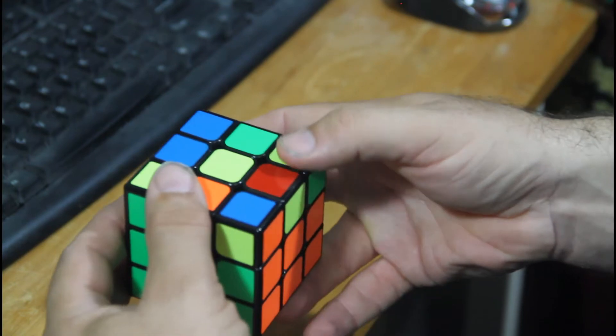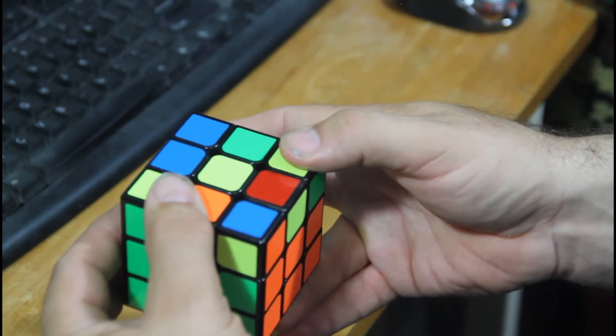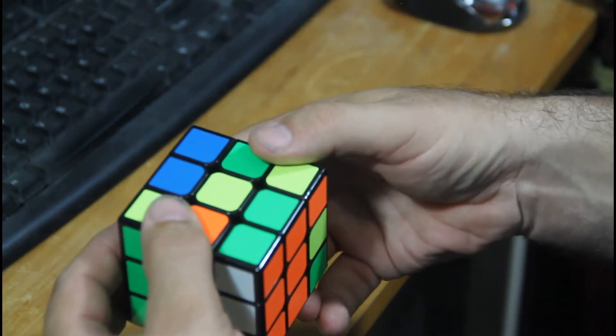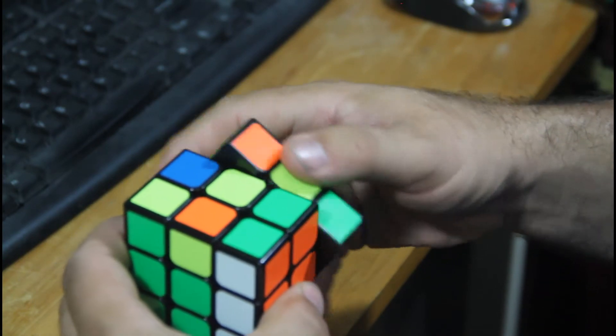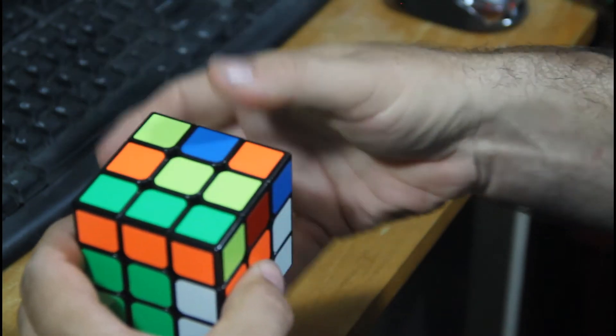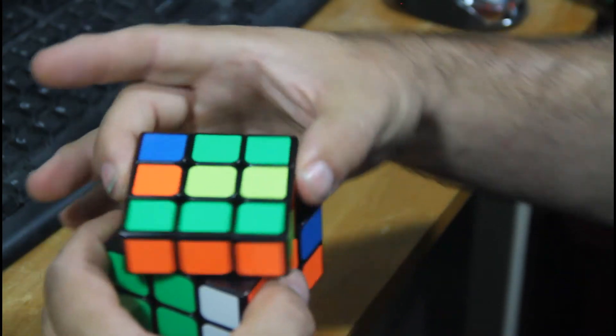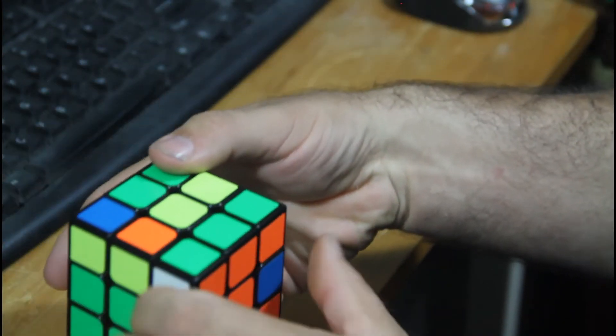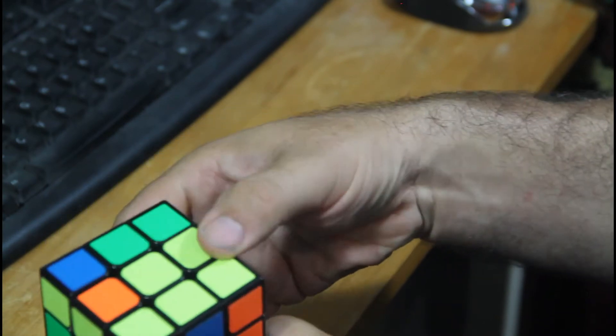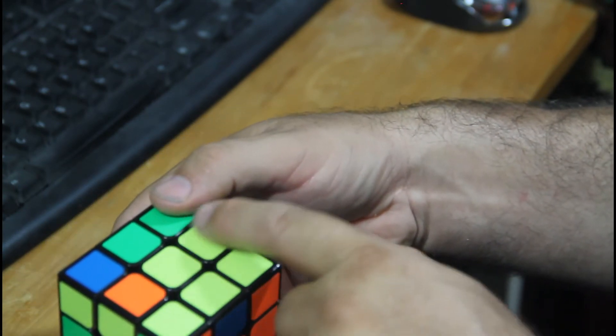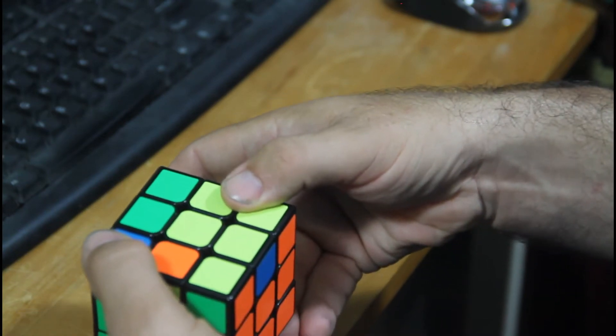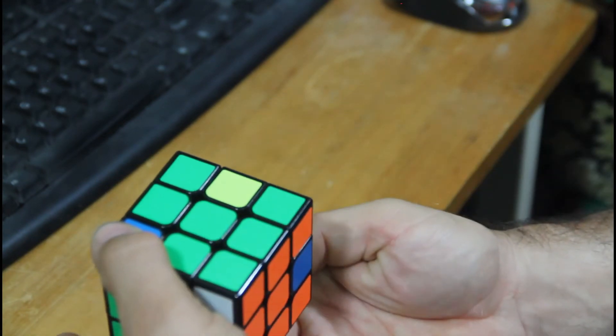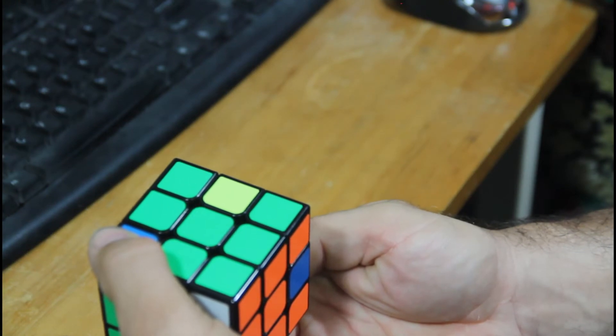To start, you move front, move right, move up, move right backwards, move up backwards, then move front backwards. Now you have the L shape. Now you use both front and middle.